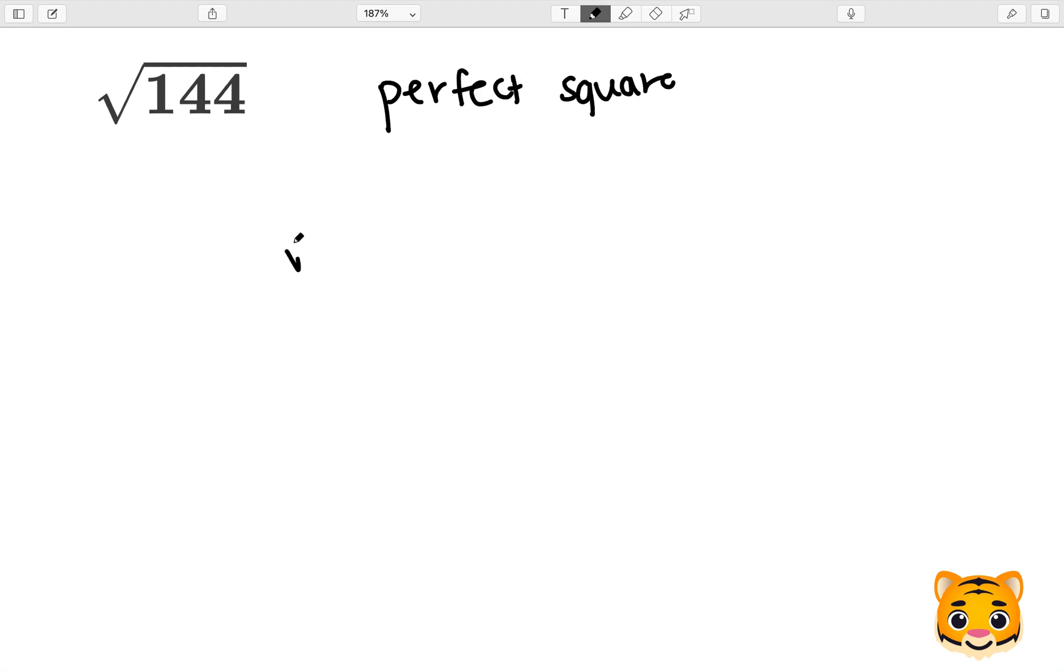A perfect square is a value where if you take the square root of that perfect square number, you get a whole number out. Some examples of perfect squares include 4, 9, 16, 25, 36, 49, and it continues on.